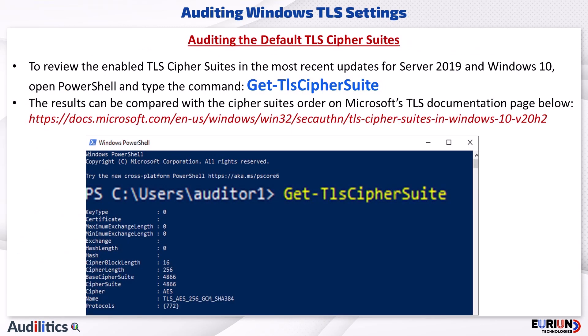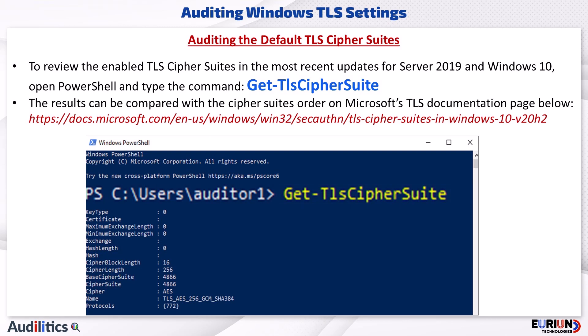To review the enabled TLS Cipher Suites in the most recent updates for Server 2019 and Windows 10, we can open PowerShell and type the Get-TLSCipherSuite command. The results can be compared with the Cipher Suites order on Microsoft's TLS documentation page.